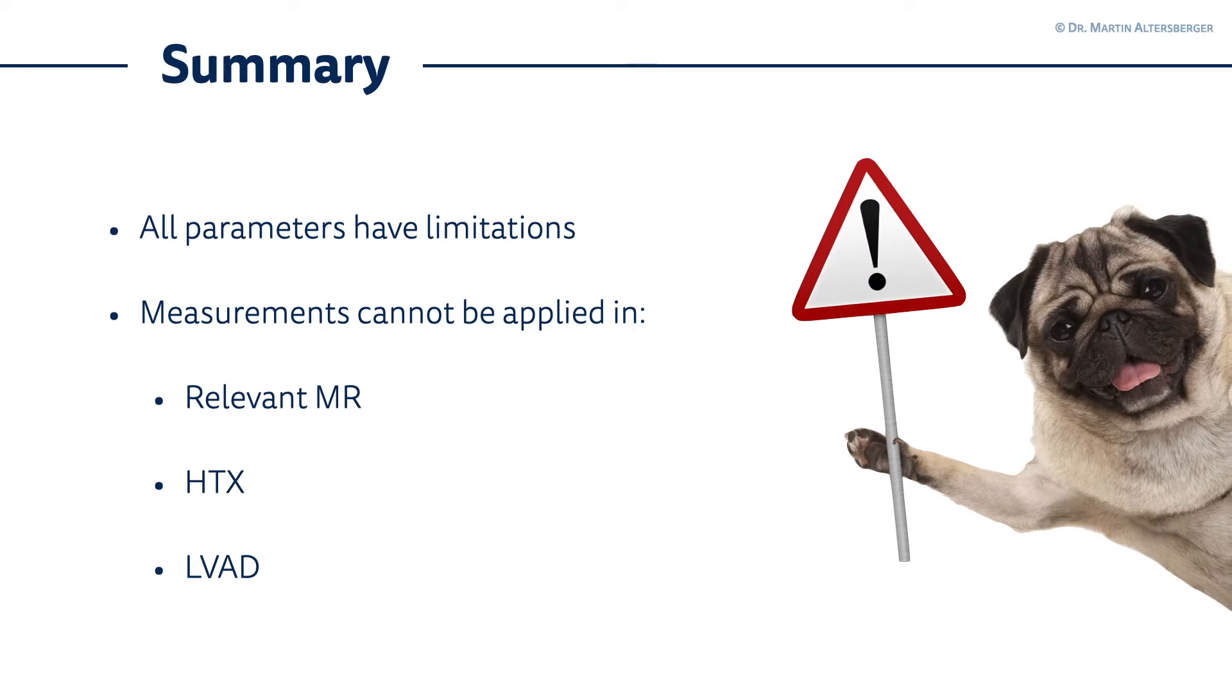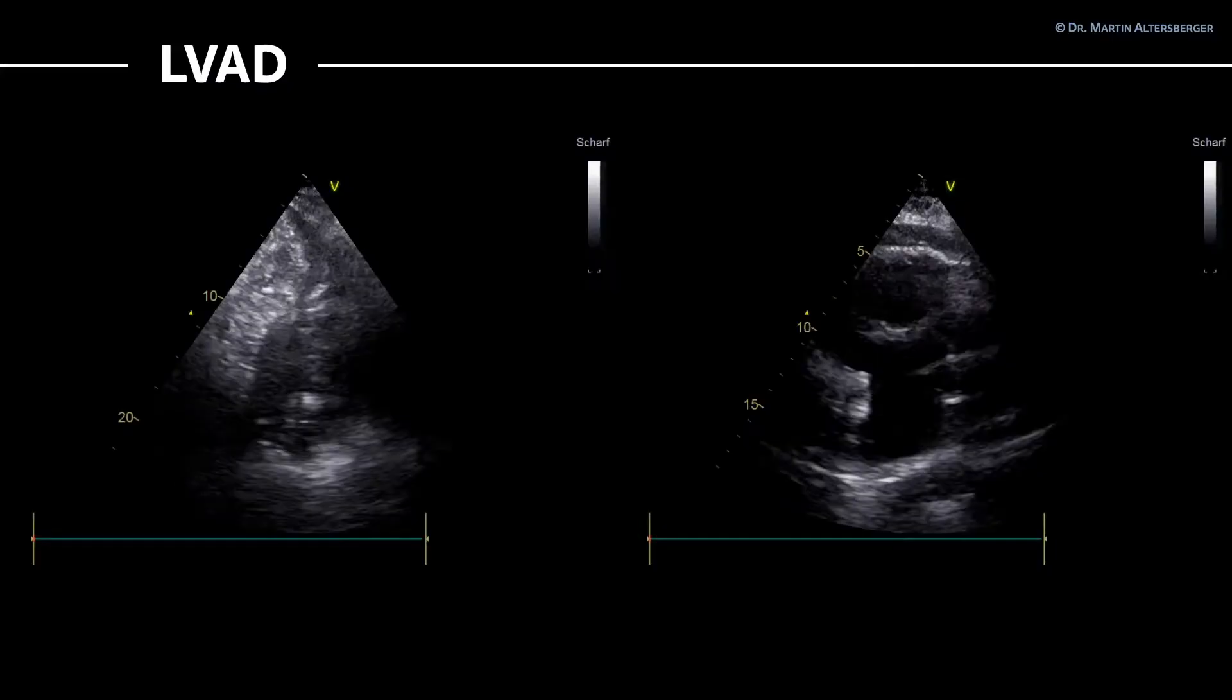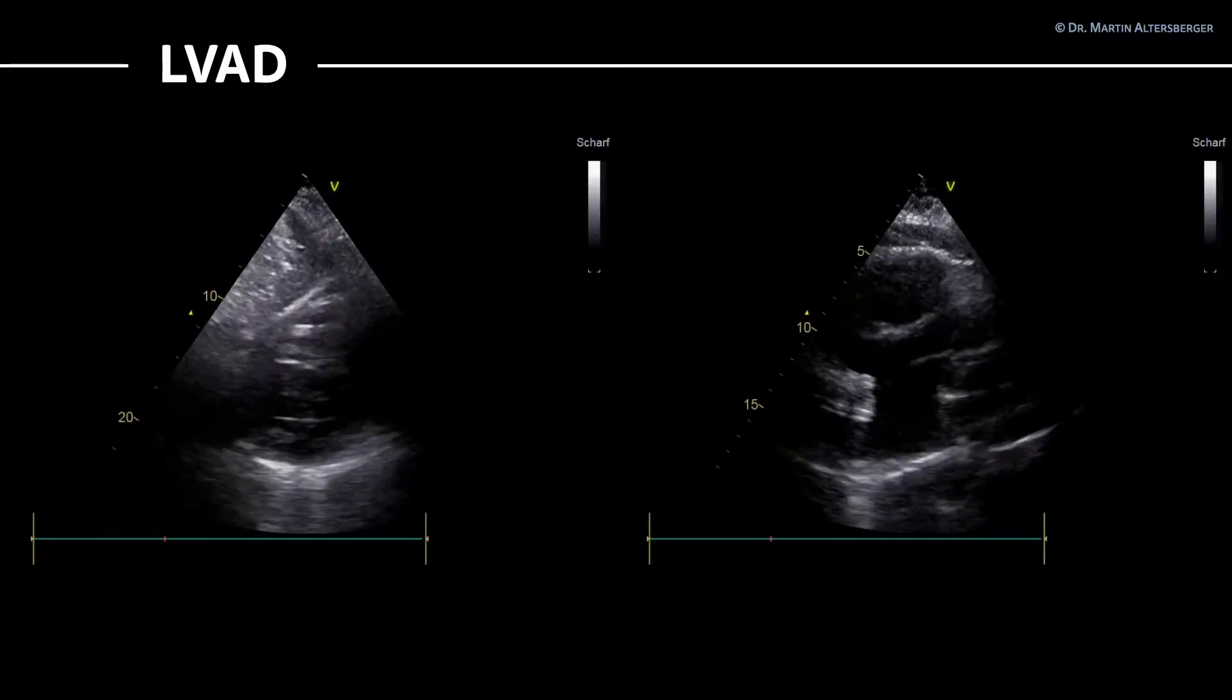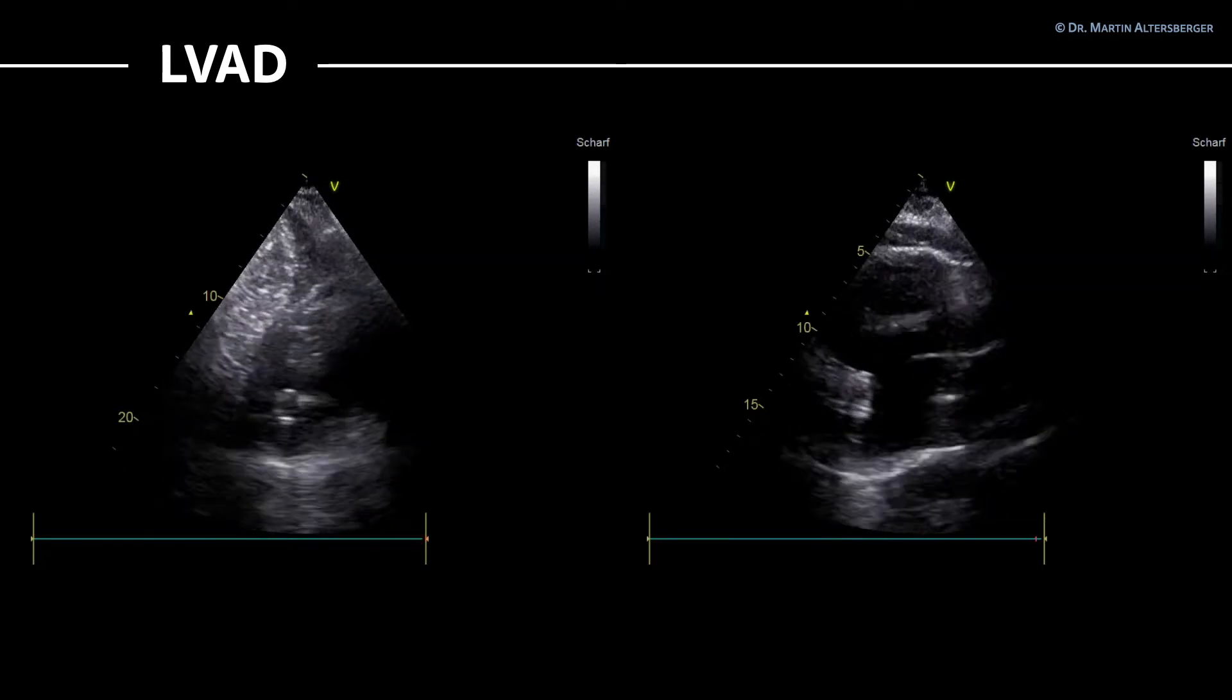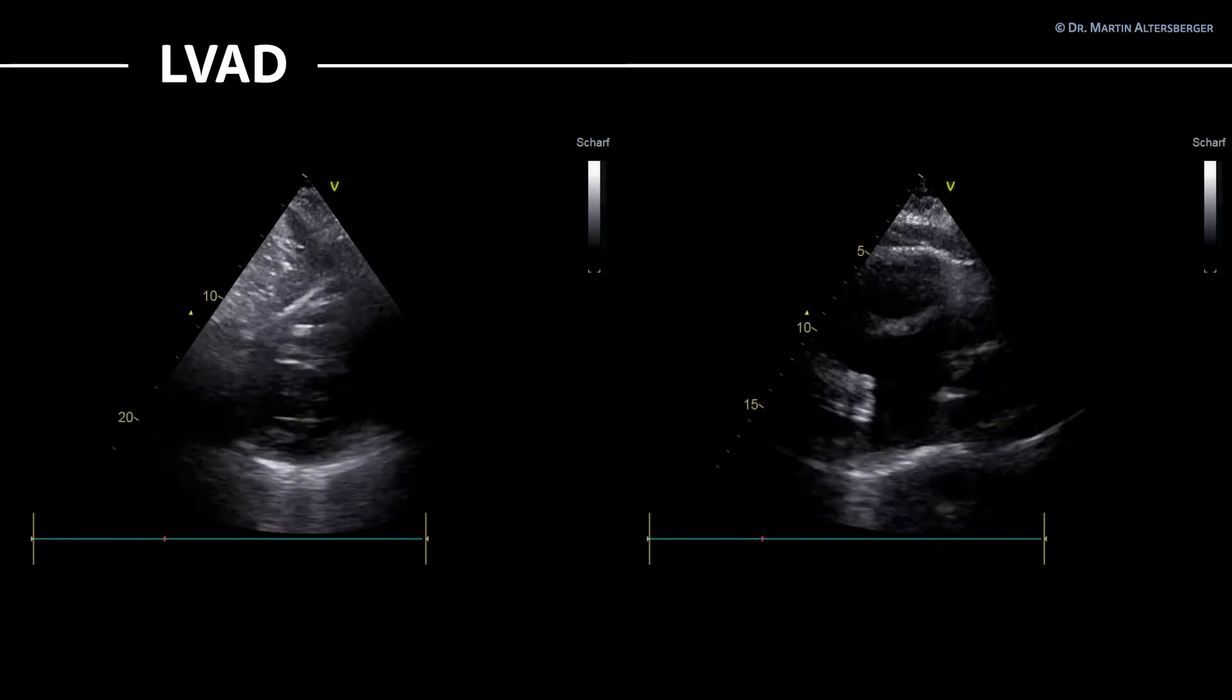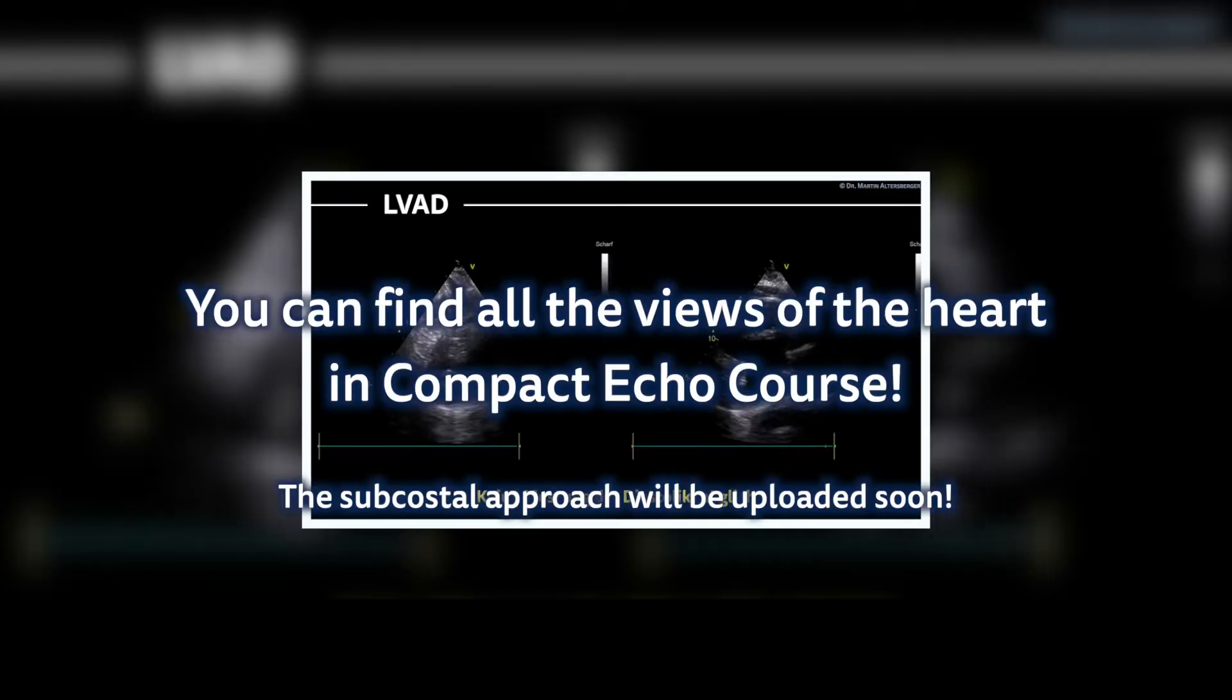The next situation where you cannot apply the measurements is in patients with a left ventricular assist device. How do you know that there is a left ventricular assist device present? Left ventricular assist devices are used in heart failure patients. In this case, you see a short axis view of the subcostal approach of the heart. If you want to know how to perform subcostal views - not only the four chamber view - in the compact echo course, you will find videos about the subcostal approach and all other views of the heart as well.